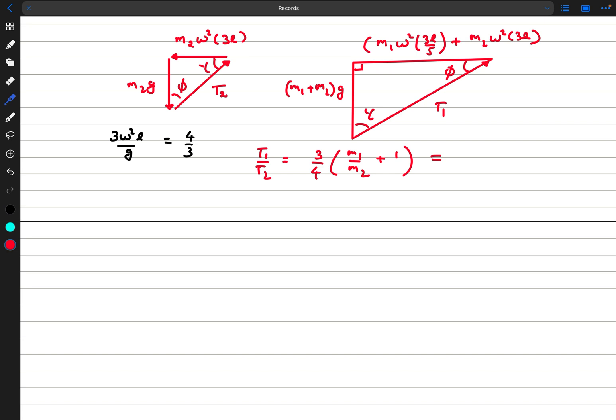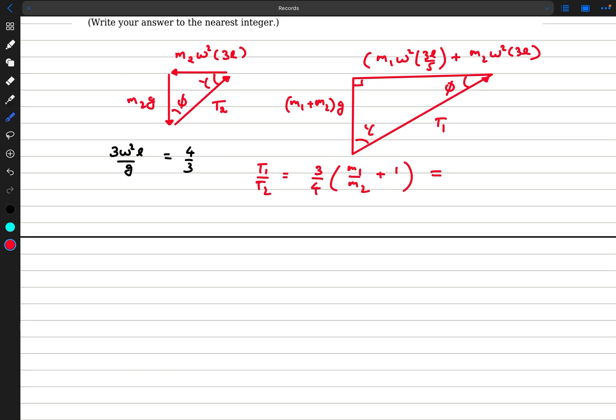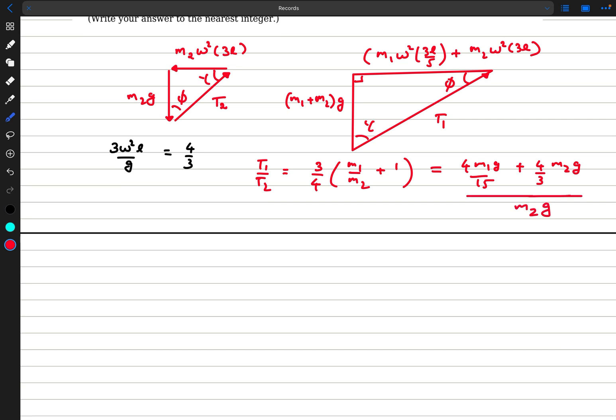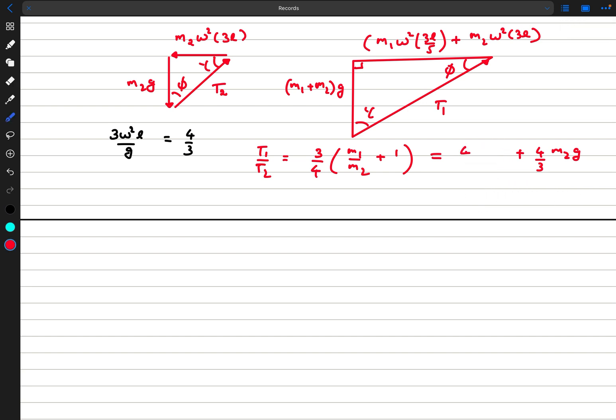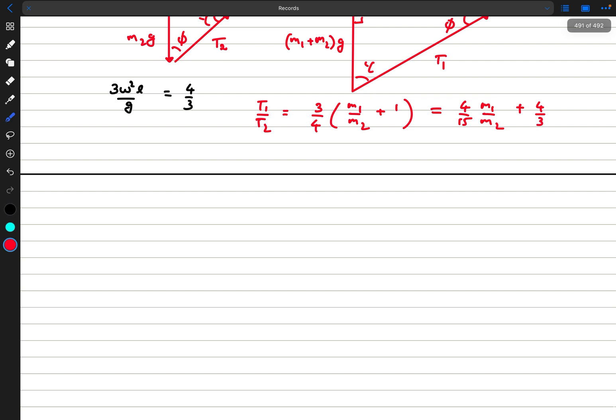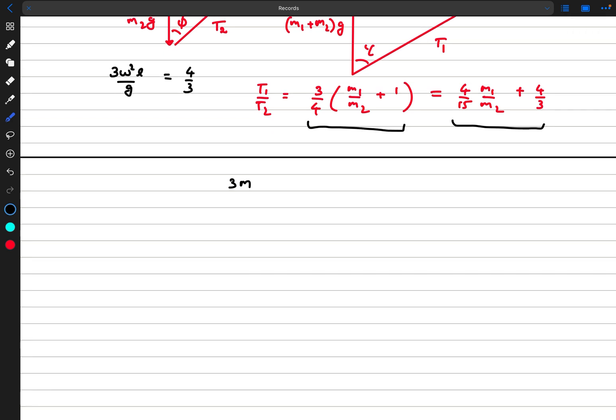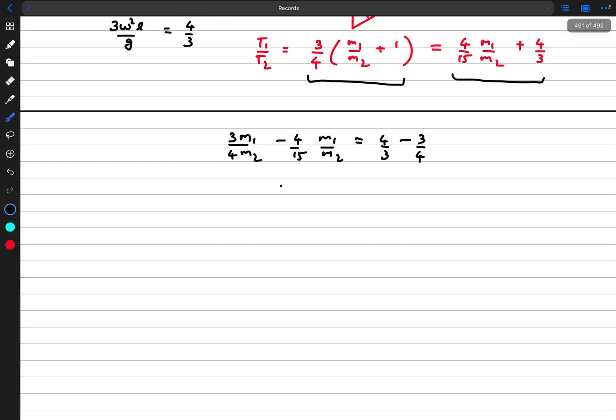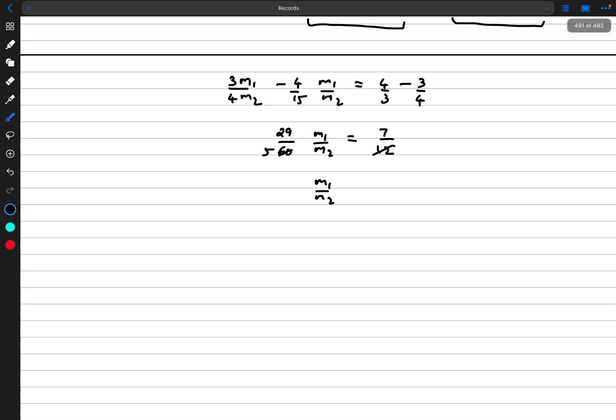Now, this is also equal to the big centrifugal term. Now here the thing is, we can directly write 3 omega squared L as 4 g by 3. So this will be 4 m1 g by 15 plus 4 by 3 m2 g. And this whole thing becomes 4 by 15 m1 by m2 and this thing becomes 4 by 3. So this is basically the ratio now. So we'll just equate these two to find out m1 by m2 first. 3 by 4 m1 by m2 minus 4 by 15 m1 by m2 equals 4 by 3 minus 3 by 4. So this becomes 45 minus 16, so 29 divided by 60 m1 by m2. And this is 16 minus 9, 7 divided by 12. So these cancel out and we get m1 by m2 as 35 by 29.